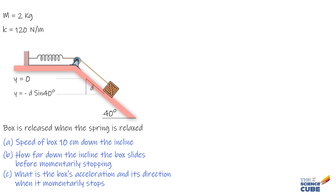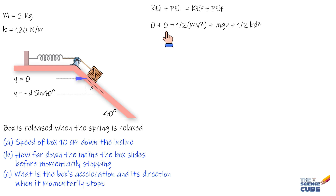Using the energy conservation principle: kinetic energy initial plus total potential energy initial equals kinetic energy final plus potential energy final. Initially the box is at the reference level (y = 0), so gravitational potential energy is 0. It is also stationary, so kinetic energy is 0. Additionally, the spring is unstretched, so elastic potential energy is also 0.